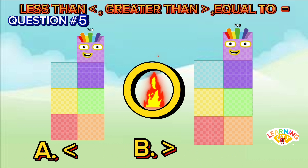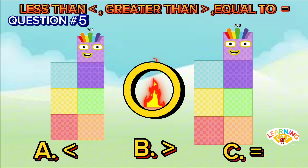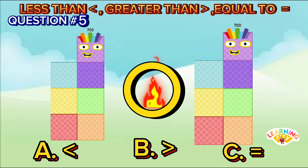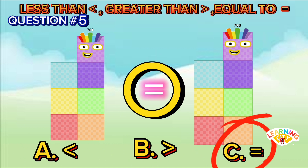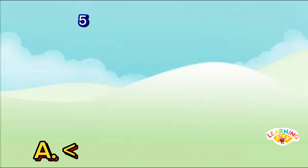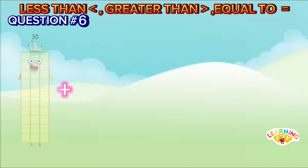500 and 500. Is it A less than, B greater than, or C equal to? The answer is C equal to — 500 is equal to 500. 30 plus 11.